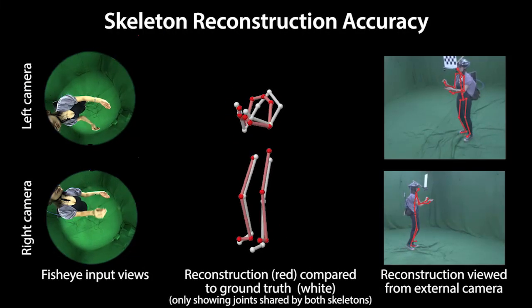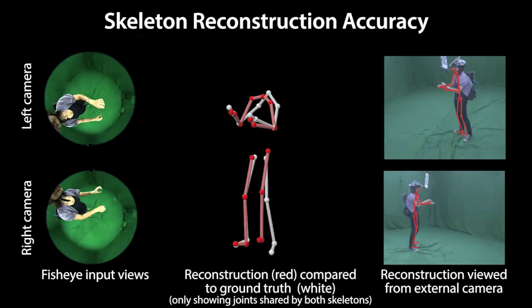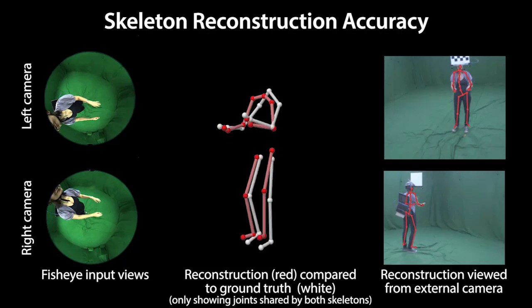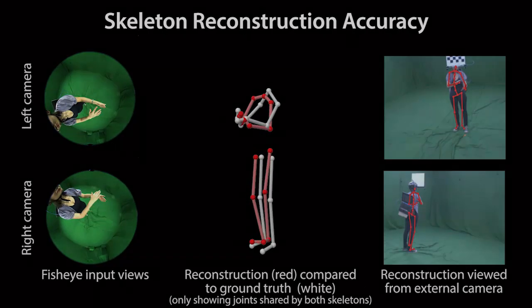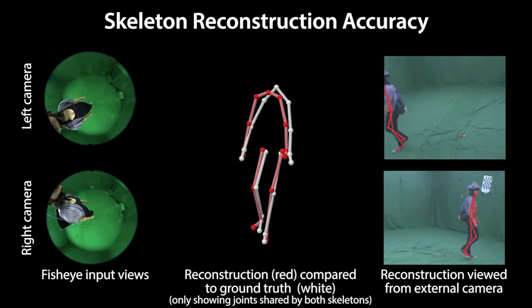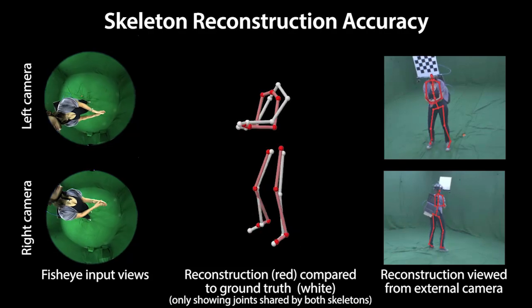We evaluate the quantitative accuracy with respect to ground truth obtained by a markerless multi-view motion capture system. We achieve good accuracy, with an average joint position error of less than 10 cm. The checkerboard is used as reference to map between the fisheye and multi-view camera coordinates. Some slight jittering is caused by inaccurate checkerboard detection.